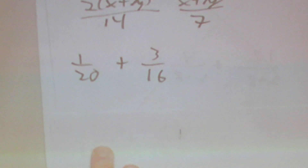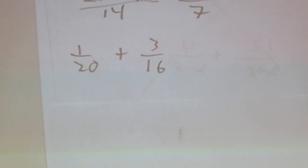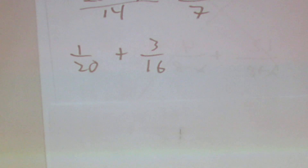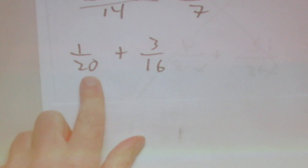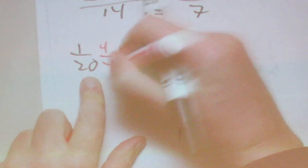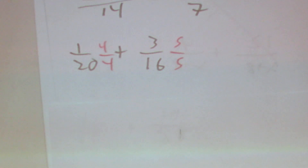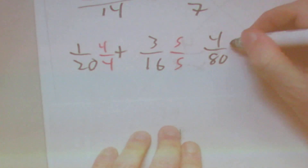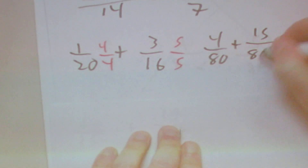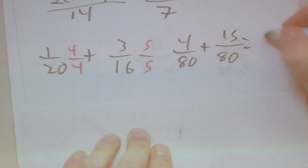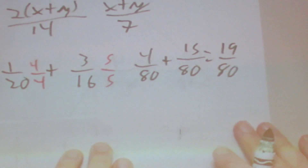Next, we have 1 over 20 plus 3 over 16. We need to find a common denominator, and if we use 80: 20 goes into 80 four times, so we multiply the first fraction by 4 over 4; 16 goes into 80 five times, so we multiply by 5 over 5. We get 4 over 80 plus 15 over 80, which equals 19 over 80.